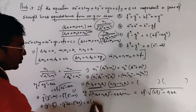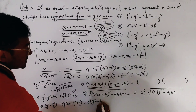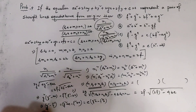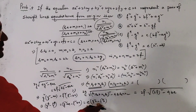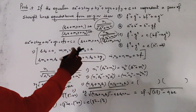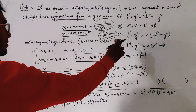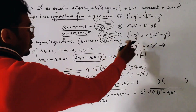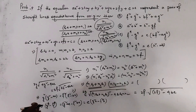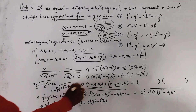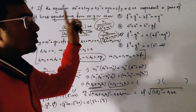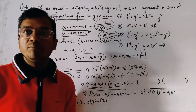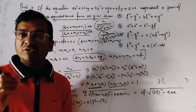Rearranging: G to the power 4 minus F to the power 4 equals c times (aG squared minus bF squared). The given option has F to the power 4 minus G to the power 4, so taking minus 1 common from both sides, we get option C as the correct answer. This is a very important type of problem from pair of straight lines.